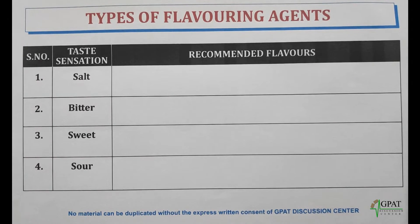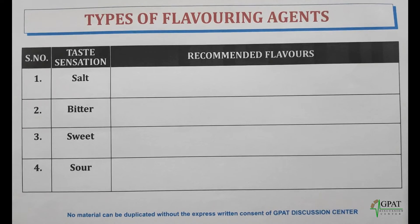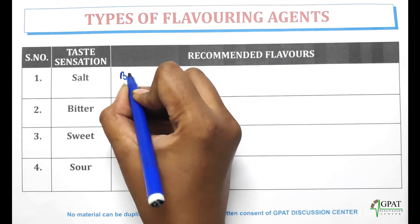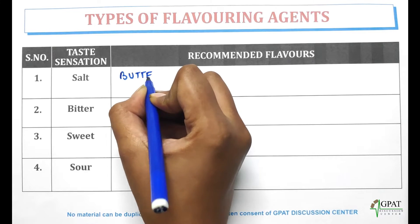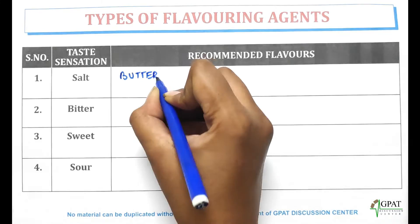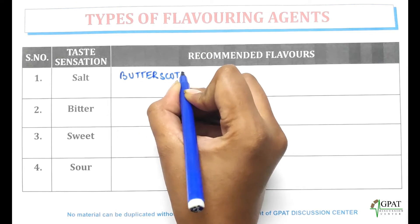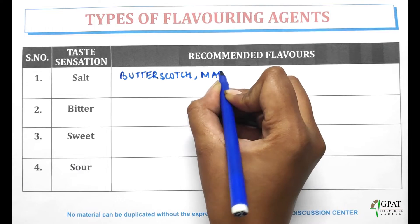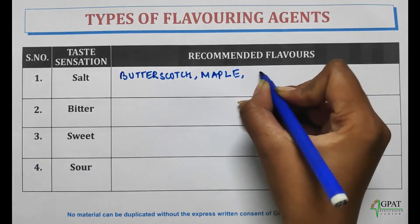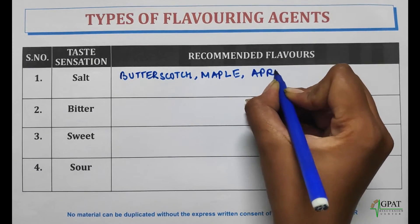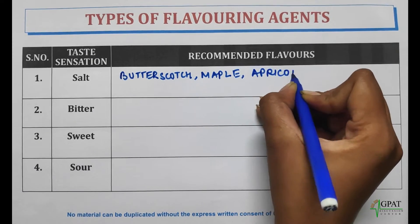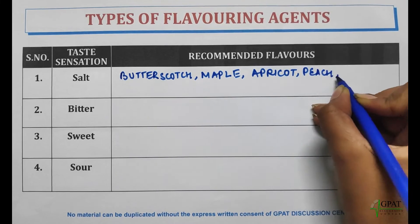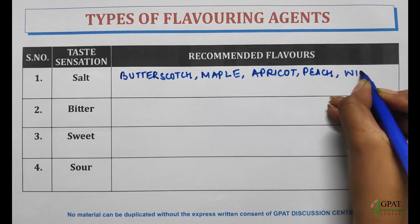The Salt category includes flavors such as Butterscotch, Maple, Apricot, Peach, and Wintergreen Mint.